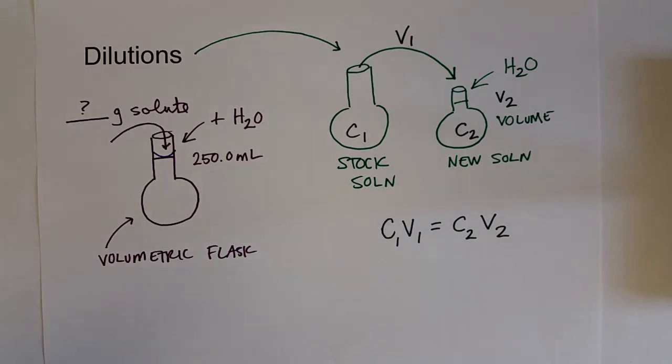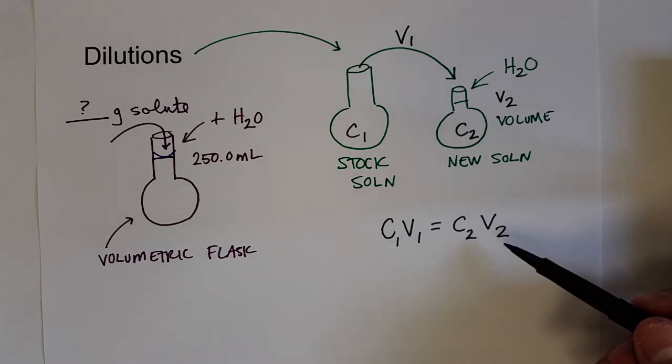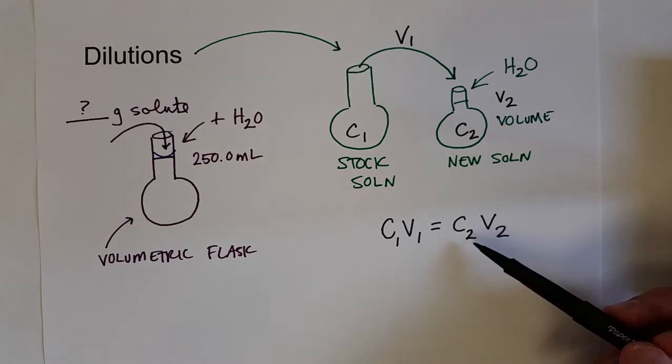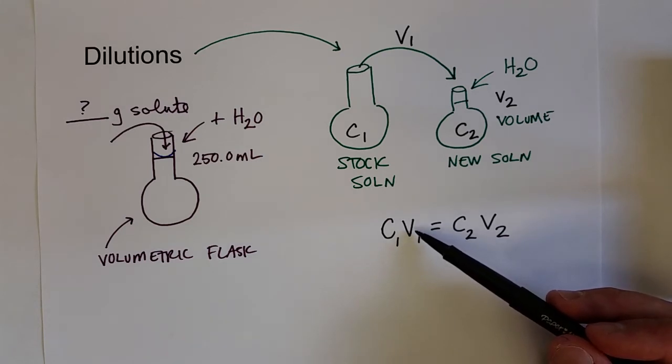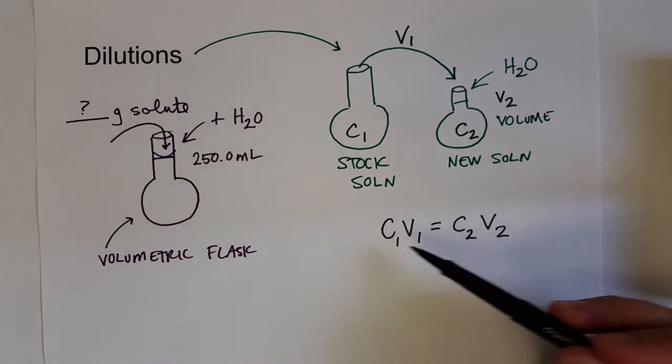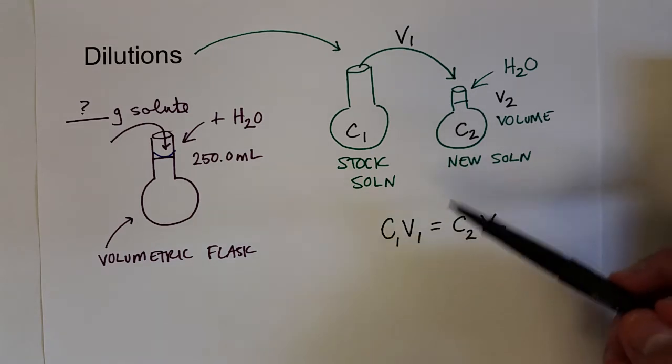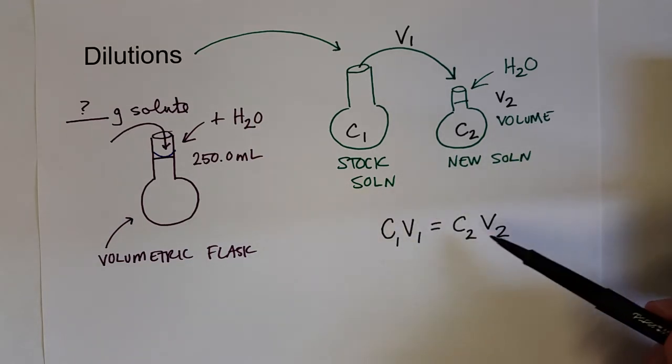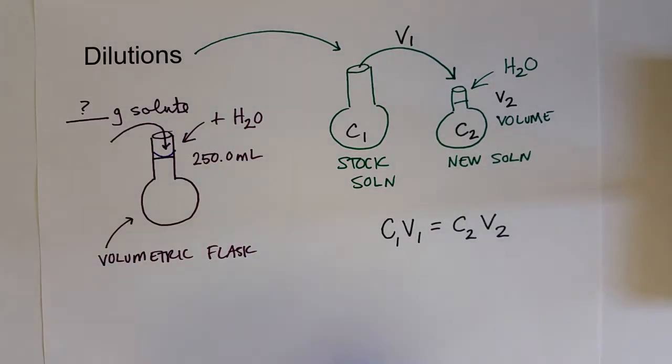This is a really common way to make solutions from stock solutions that have already been prepared. In solving these types of problems, basically what you're going to be given is three of these variables. Say you have your concentration of your stock solution, you know you want to make a solution of some concentration, you know how much of that solution you need V2, how much of the stock solution do you need to use? Or you know how much concentration of the stock solution is, you know what volumes you used of both the stock solution and your new diluted solution, what's the new concentration? You could solve for C2.